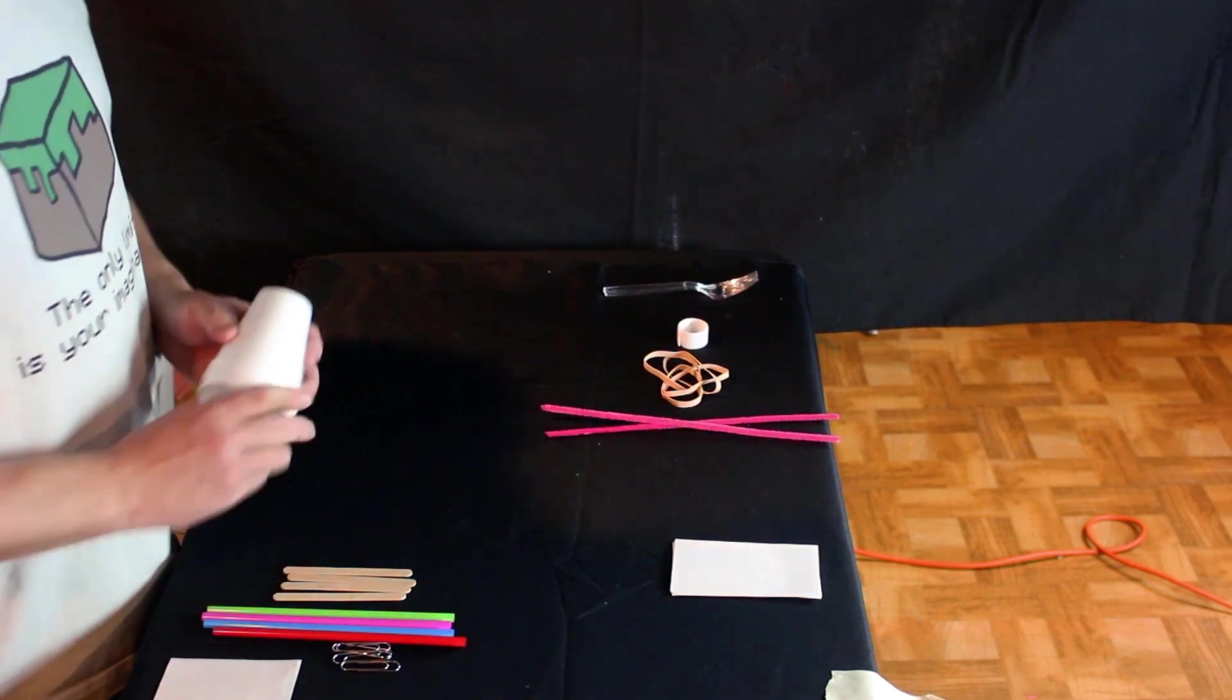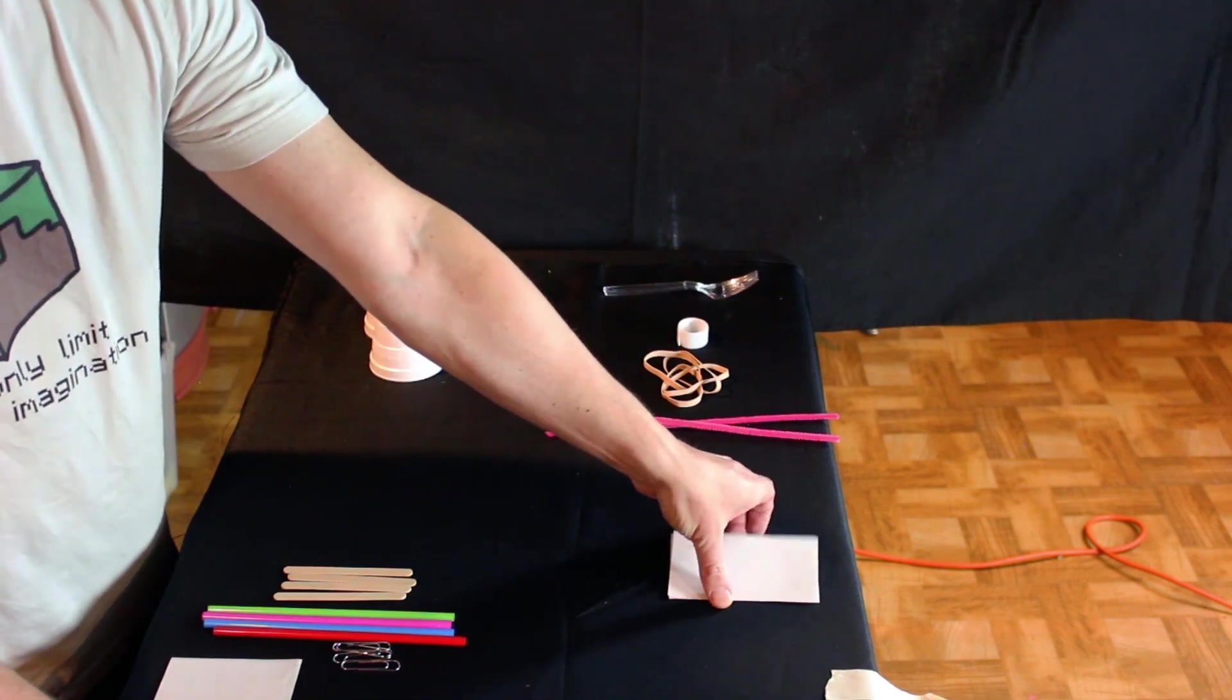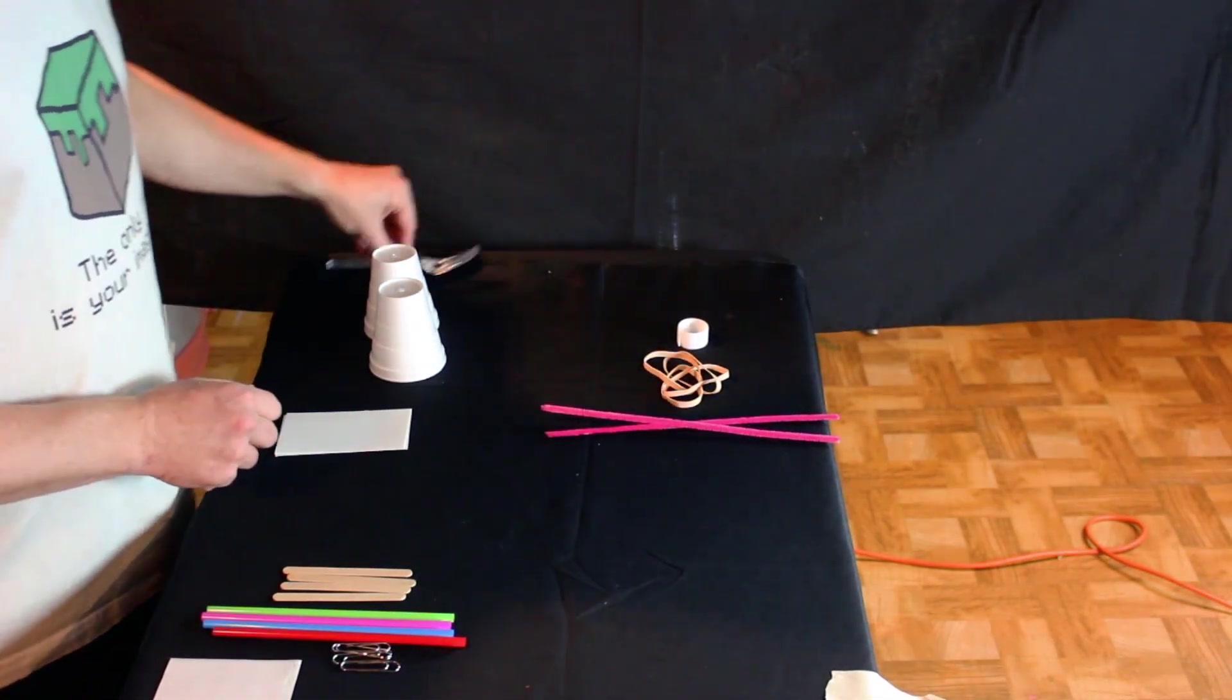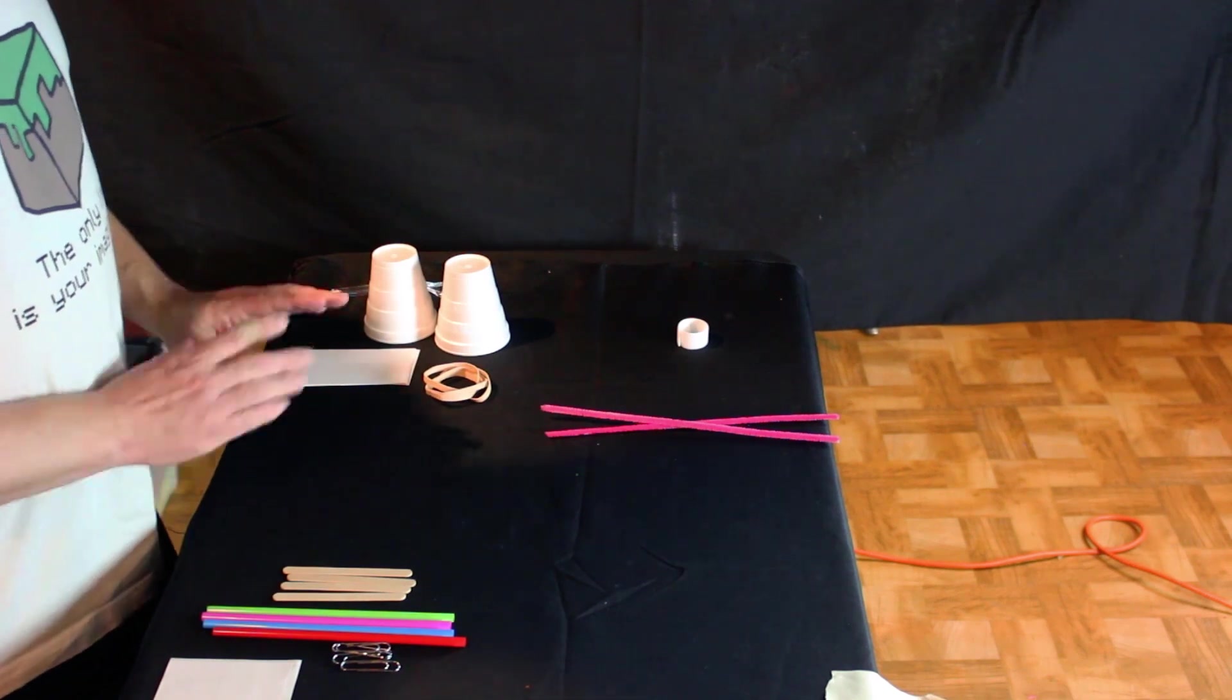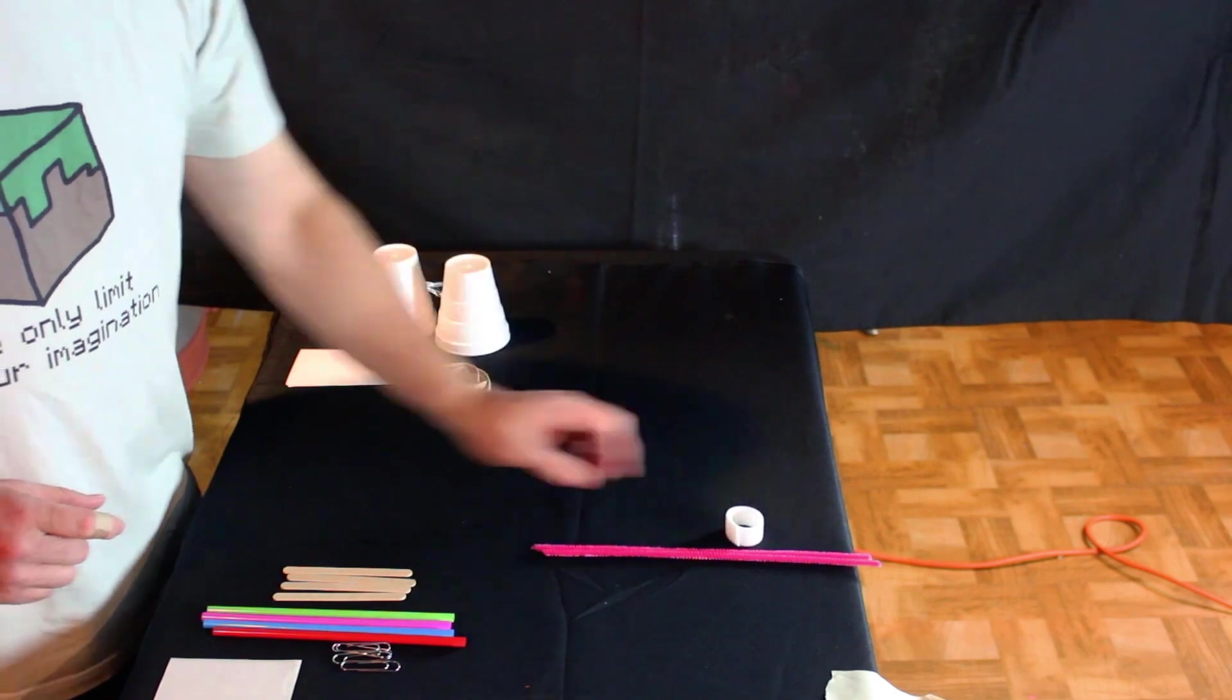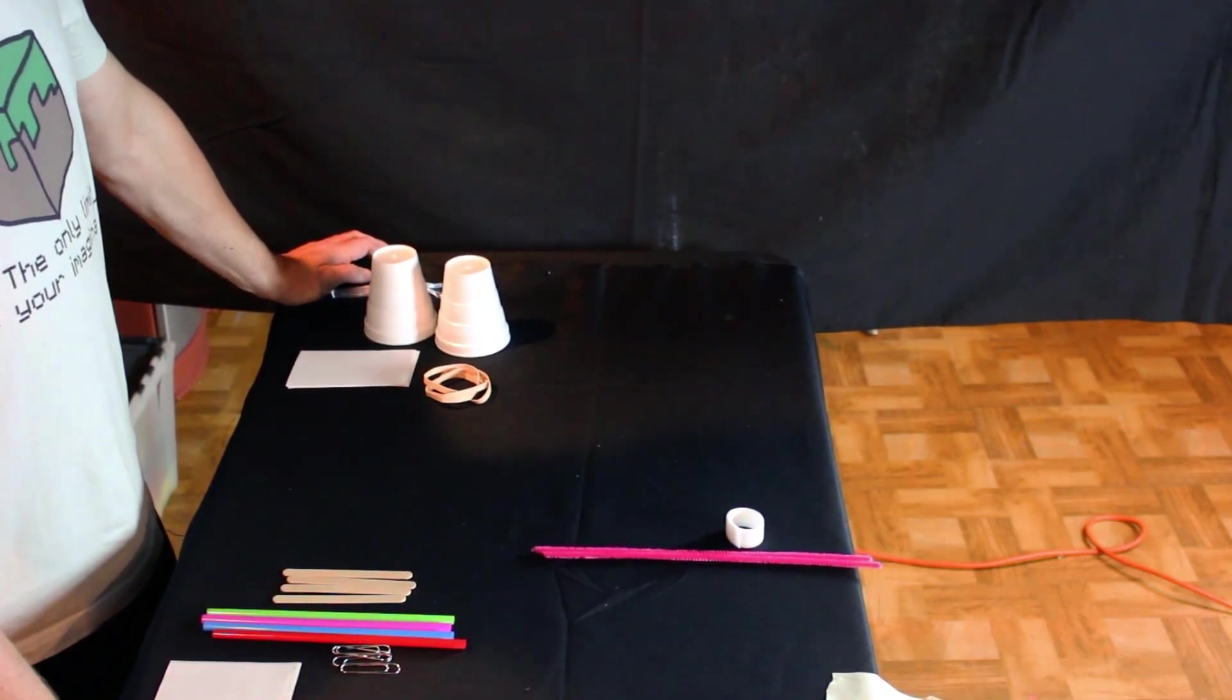That leaves us with two styrofoam cups, the note cards, the forks, and something to hold them together, the rubber bands. I'm not sure what we're going to do with these two yet, so let's just leave those where they are and start constructing our towers.